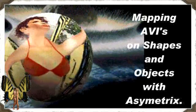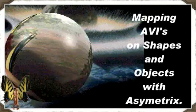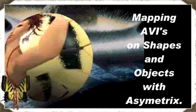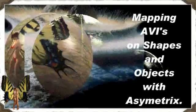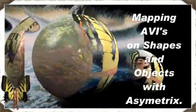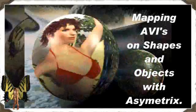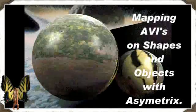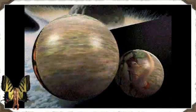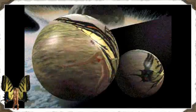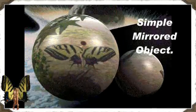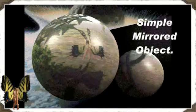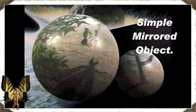Here we go. This is a sphere, 256 colours, with an AVI mapped onto it in Azimetrics with a simple background. And here's the same thing again with a very simple plane behind it, just to show that the reflection is going all the way around the sphere.